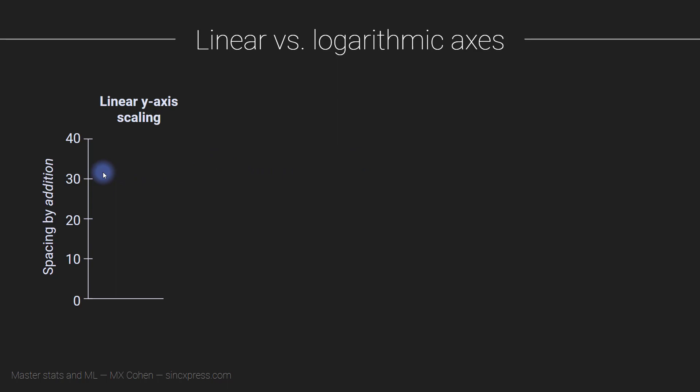So here we have a plot with linear y-axis scaling. For this slide the data don't actually matter. What does matter, what I want you to pay attention to, is the fact that the spacing on the y-axis ticks are done by addition. We start at zero and then we say zero plus 10 is 10 plus 10 plus 10 plus 10. The spacing between each of these ticks on the y-axis is given by the addition operation.